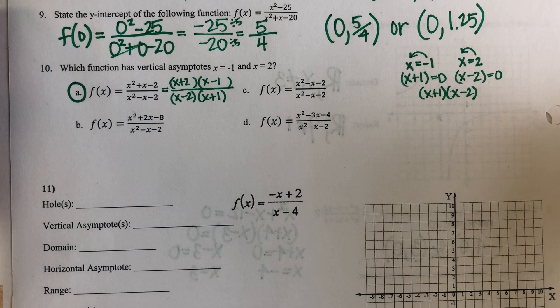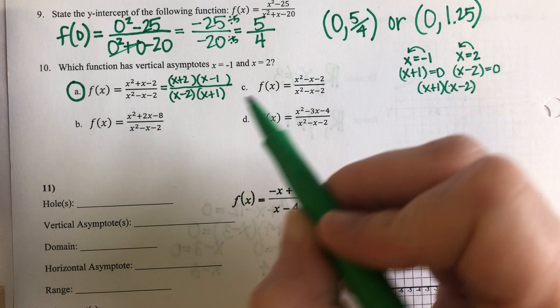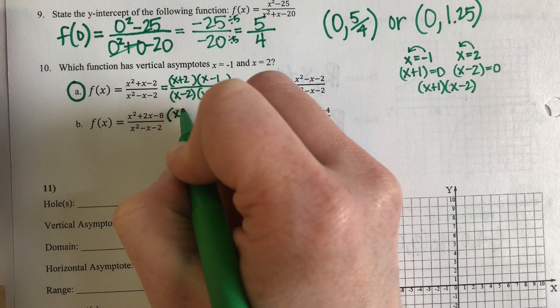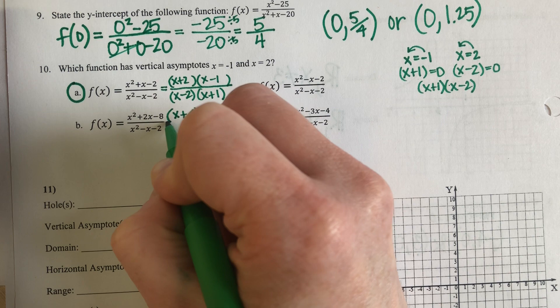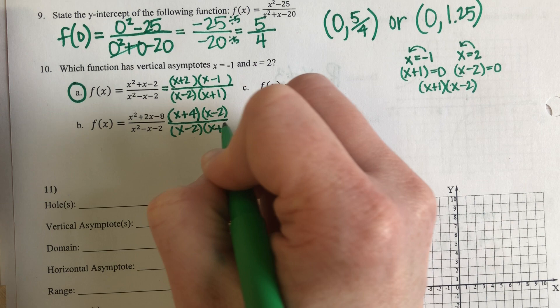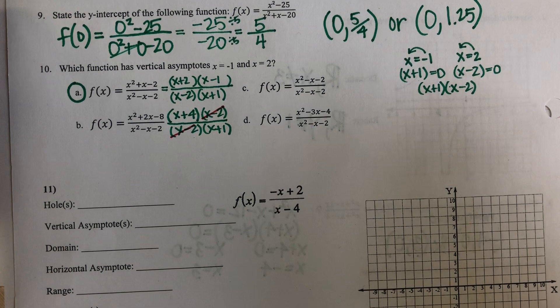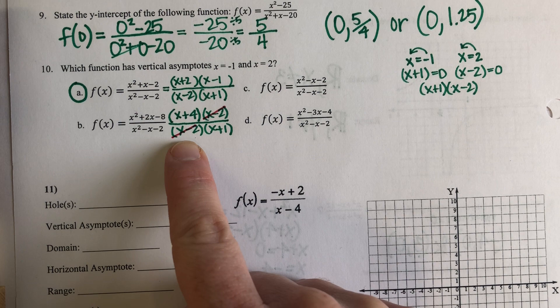Just to show you what to expect on your test — it might not be answer choice A, I might have had to do a couple more problems just to make sure. If I am looking at answer choice B, the numerator factors into X plus four and X minus two. The bottom has the exact same denominator, so it factors as X minus two and X plus one. But this X minus two and that X minus two cancel out, so there would not be a vertical asymptote there.